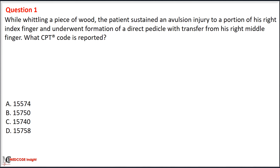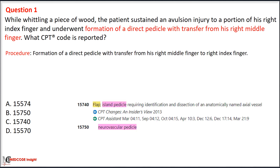Option D: 15758. In the given scenario, formation of a direct vertical flap transfer from his right middle finger to the right index finger is performed.